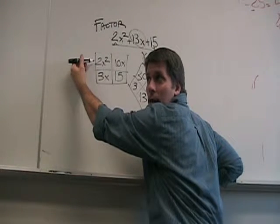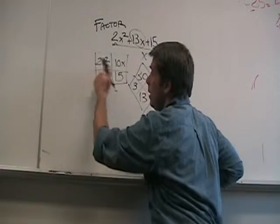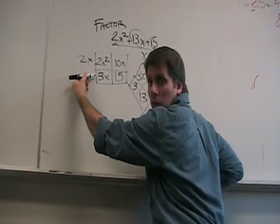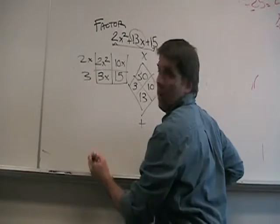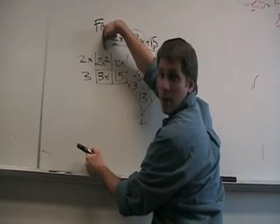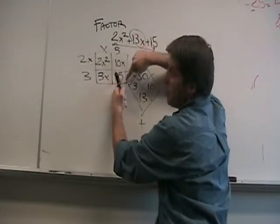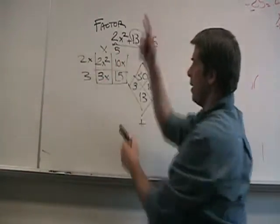If I look across this one, what goes into both of those: 2 and an x. Look across here. These are both divisible by 3. If I look down this way, an x. If I look down this way, a 5. And I can check it. That multiplies to 15, 10x and so on.